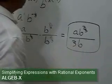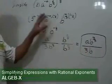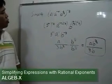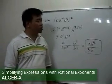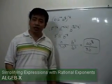So this is the simplified form of 81, a to the negative 4 b to the 4 thirds raised to the negative 1 fourth.